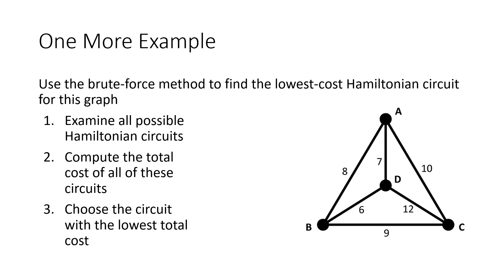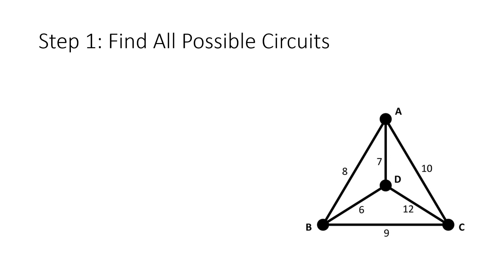Let's do one more example — use the brute force method to find the lowest cost Hamiltonian circuit for this graph. We have three steps: look at all possible Hamiltonian circuits, compute the total cost of all circuits, then choose the circuit with the lowest total cost. Notice I didn't give a specific starting point — we'll talk about that at the end. For now, let's assume A is our starting point.